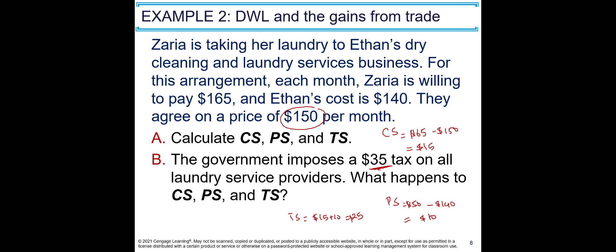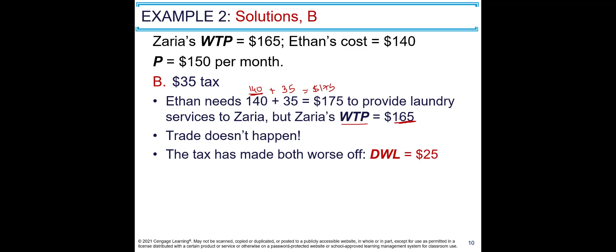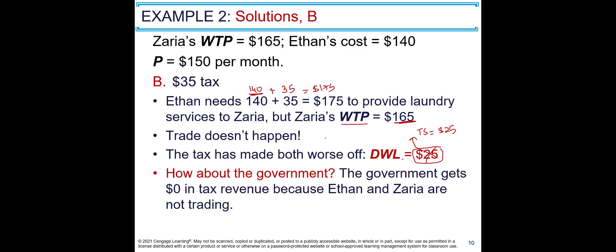Now the government imposes a $35 tax on all laundry service providers. Eaton's cost is now $140 plus $35 equals $175 minimum to provide the service, but Zaria's highest willingness to pay is only $165. So she won't pay $175 and trade doesn't happen. The tax has made both worse off — the deadweight loss is $25, which is the total surplus that's now lost. The government also collects zero tax revenue because no transaction occurs. Everyone — Zaria, Eaton, and the government — is worse off.